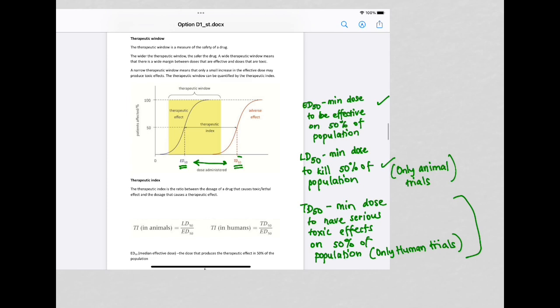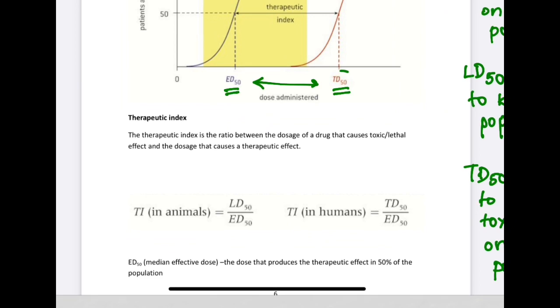When we determine the therapeutic index, the therapeutic index is the ratio between the dosage of a drug that causes toxicity and the dosage that causes therapeutic effect. Therapeutic effect, this is what we are looking for, this is the positive. And toxicity or lethal effect, this is what we don't want, this is the negative. So therapeutic index is a ratio of the two.